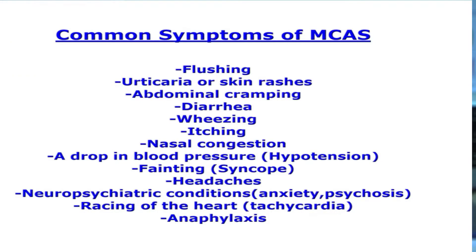Mast cells, if they become overactive and produce these mediators inappropriately and excessively, cause a syndrome that we call MCAS, or Mast Cell Activation Syndrome. Mast cells produce a vast number of mediators including leukotrienes, prostaglandin D2, histamine, and tryptase.